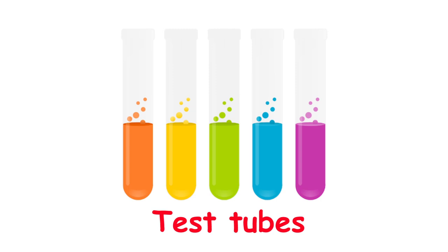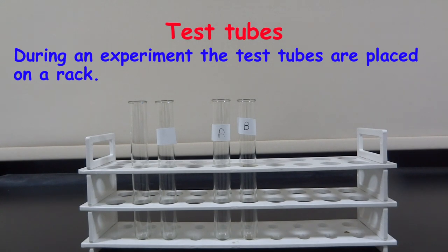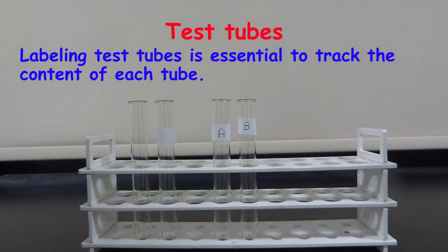Test tubes are used to hold chemicals while experimenting. They are useful during qualitative tests. During an experiment, the test tubes are placed on a rack. Labeling test tubes is essential to track the content of each tube.